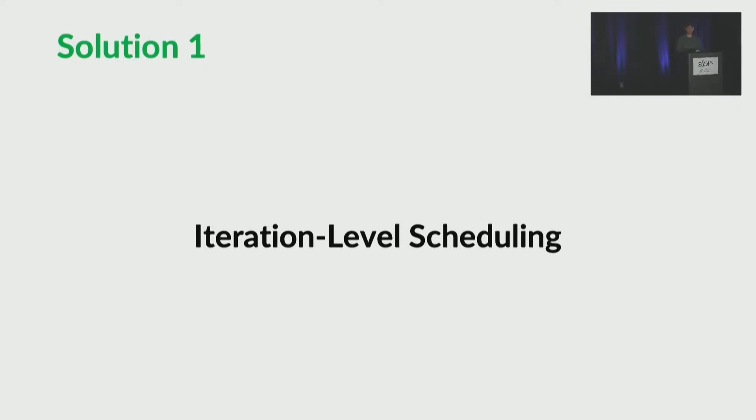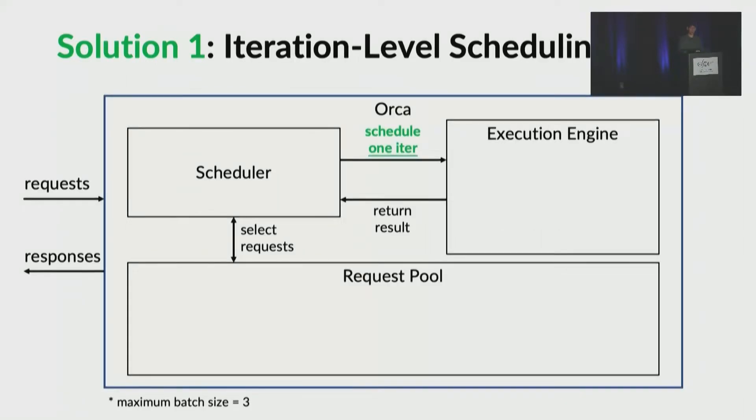Our solution to this problem is iteration level scheduling. We ask the engine to execute in a fine grained manner. In iteration level scheduling, the scheduler selects requests for one iteration and sends the batch to the engine to execute one iteration of generating a token per request and return its result. Let's look at an example. We have requests x1 and x2. Again, the maximum batch size is three. The scheduler selects x1 and x2 and batches them. It sends the batch to the engine and the engine executes it.